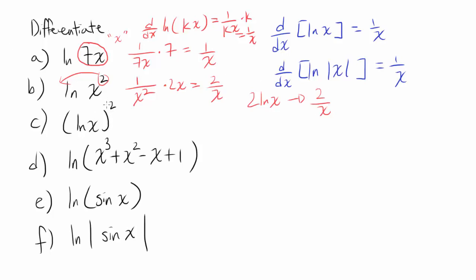Next one: natural log of x, all squared — written as [ln(x)]². In this case, you're not squaring then taking the natural log; you're taking the natural log then squaring it, so it's not the same. Let's treat natural log of x as our u for a moment. Differentiating with respect to ln(x) gives 2 times natural log of x, and then multiply by the derivative of ln(x), which is 1 over x. So you get 2 times natural log of x divided by x.